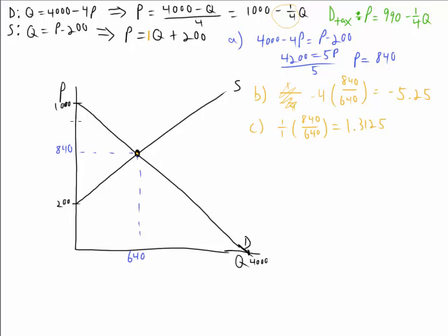So go ahead and draw that. Remember, it's a parallel shift. We have this new intercept of 990, and we want to find out what is this quantity right here that will be transacted after the tax. In order to do that, we could set this new demand equal to the same supply. And for part D, we get D is a multi-step process, so we want to set 990 minus one-fourth Q equal to Q plus 200.